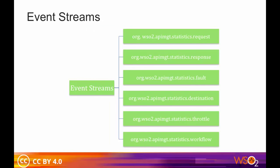API Manager 1.10.x provides six types of event streams. org.wso2.apimgt.statistics.request tracks information for the API request. org.wso2.apimgt.statistics.response tracks information for the API response, including the time taken for the response to get back, the receive time, etc. org.wso2.apimgt.statistics.fault contains the fault API invocations, including APIs with backend errors, timeout, etc.